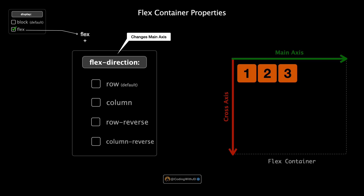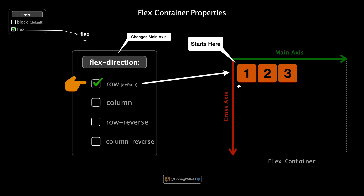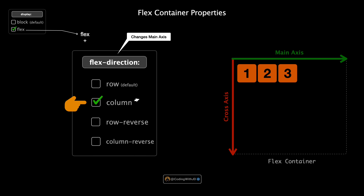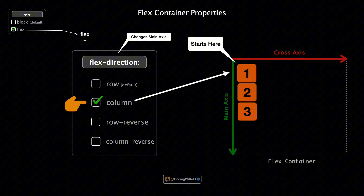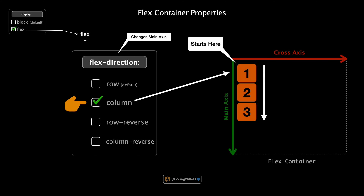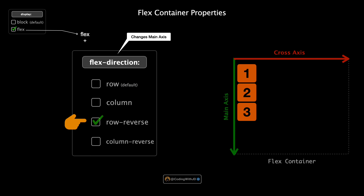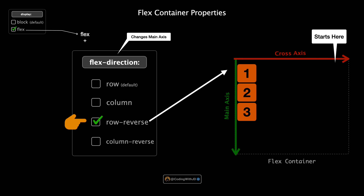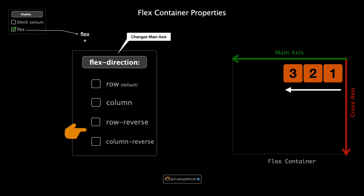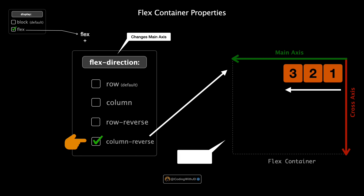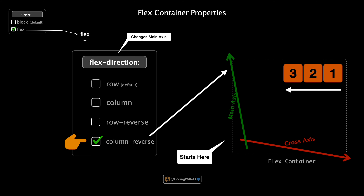It comes with four values: row, column, row-reverse, and column-reverse. By default, flex-direction is set to row, meaning our items line up side by side from left to right along the main axis. Next, let's change it to column — now our items stack vertically starting from the top left, perfect for a columnar layout especially useful in mobile views. Moving on to row-reverse: our items still line up in a row but start from the top right moving towards the left. Lastly, column-reverse — items start from the bottom left and stack upwards.